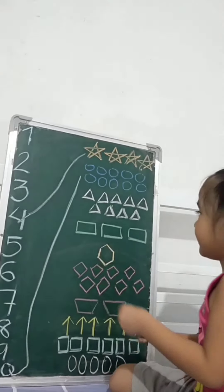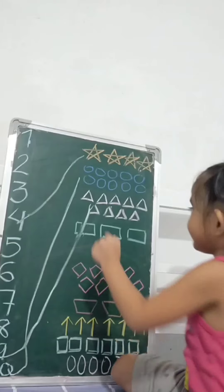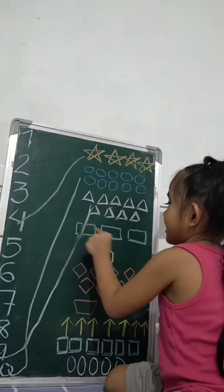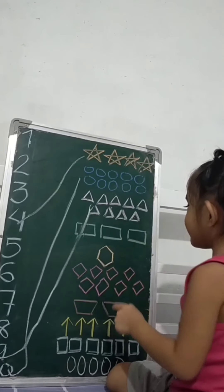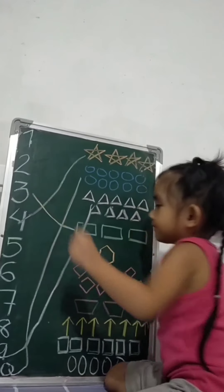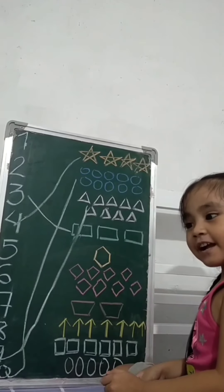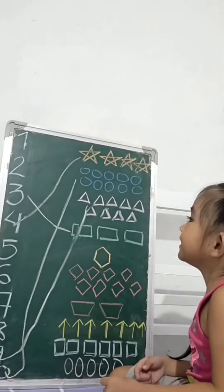Yeah, match. Next. How many rectangles? One, two, three. Three, three. Very good. Oh, how many hexagons? One hexagon. Oh, where's number one?